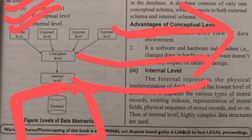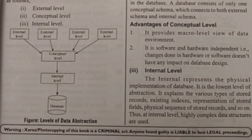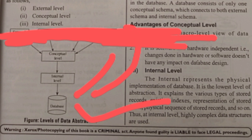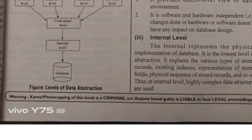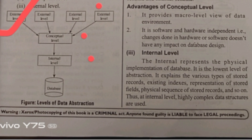For the External Level, take the example of Osmania University results. When results are out, you check your result using your hall ticket number. The university's DBA handles and stores the database, but we at the external level can only see our own data. By entering your hall ticket number, it will show only your results — not your friend's results without entering their number. That is called the External Level.